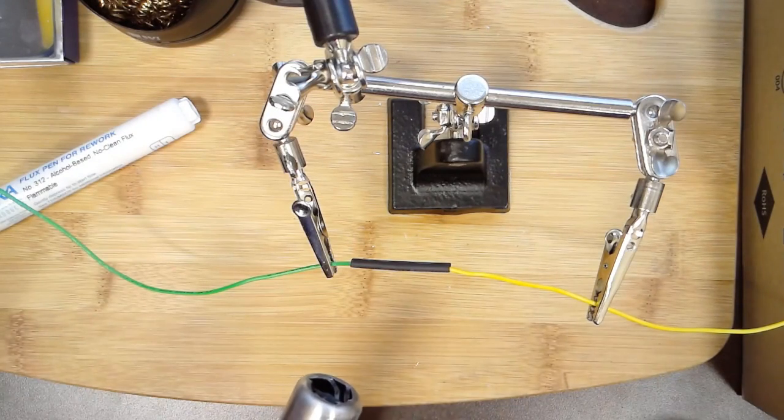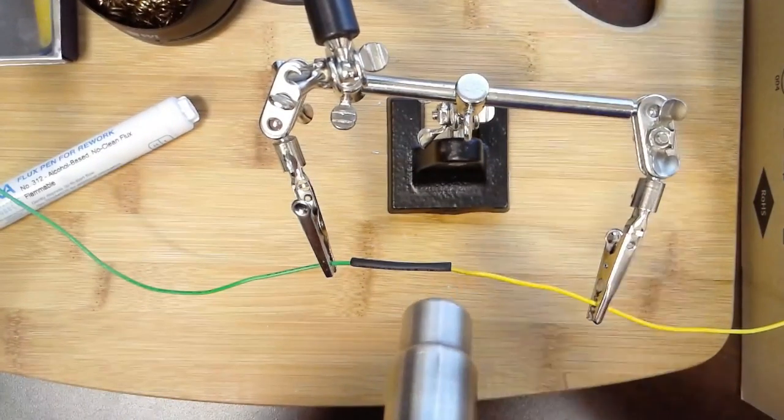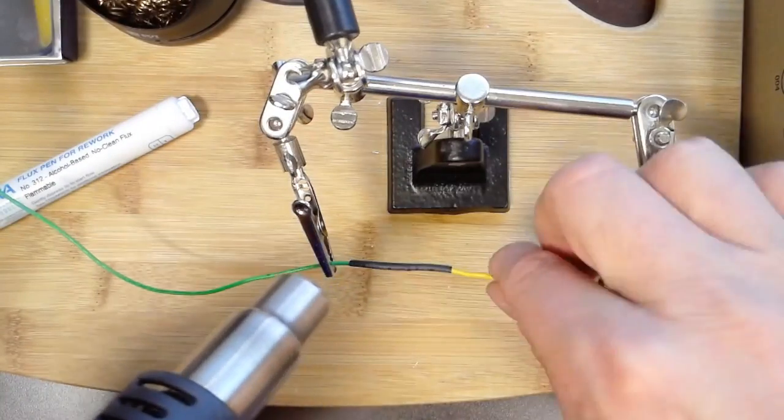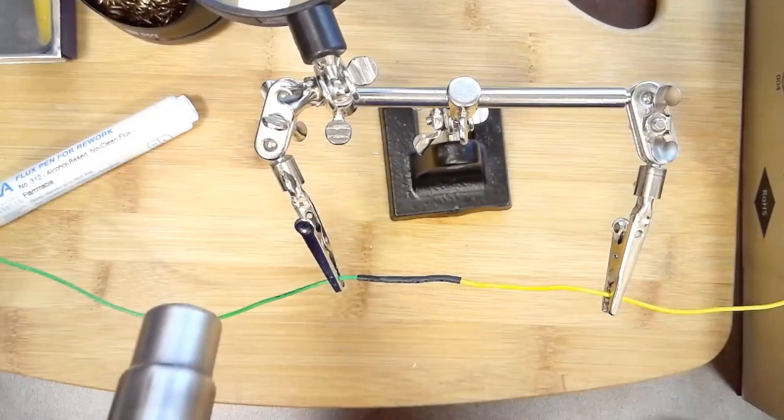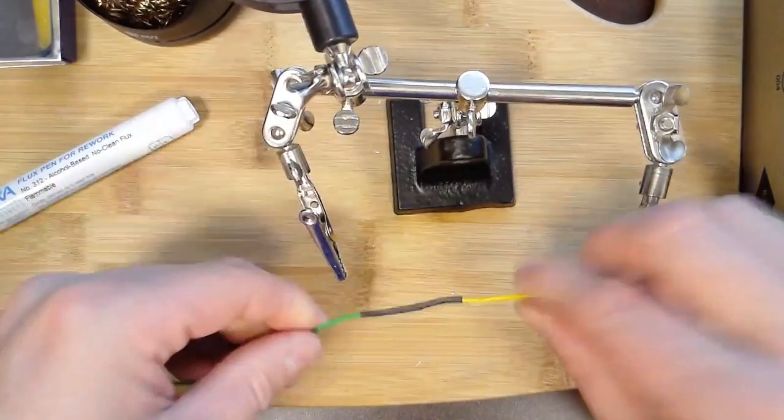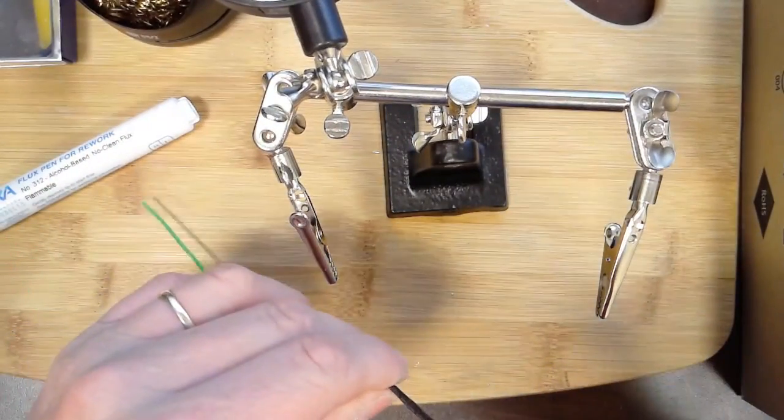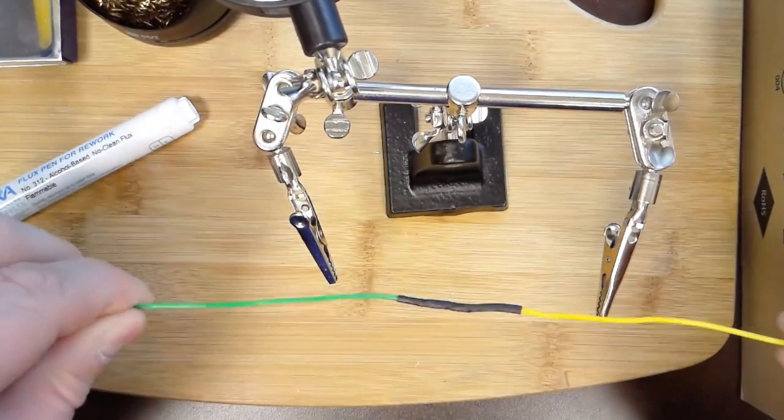As that heats up, that'll just form a nice good bond. It's that simple. Now I have two wires soldered together, shrink wrapped. It's nice, it's not going anywhere, and it looks like a real professional job.